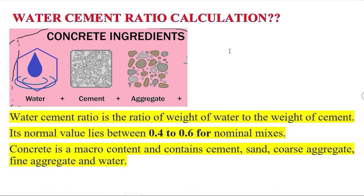Bismillahirrahmanirrahim. Welcome to the Quantity Survey course. This is our 25th lecture and the topic today is water-cement ratio calculation. We know that concrete ingredients have water, cement, and aggregate, so we have to calculate the water-cement ratio. This is the ratio of weight of water to the weight of cement. Its normal values lie between 0.4 to 0.6.